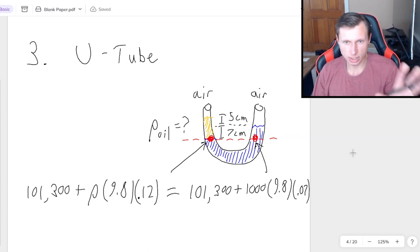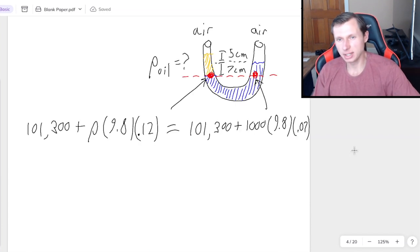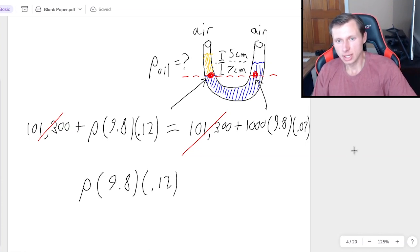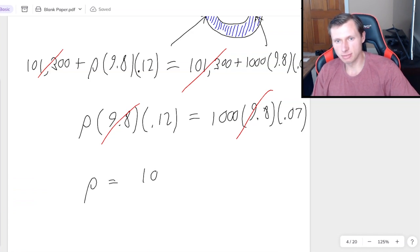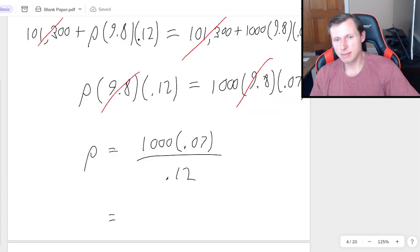I immediately notice the 101,300 will cancel on both sides. So rho 9.8 times 0.12 equals 1000 times 9.8 times 0.07. Looks like even the 9.8 will cancel, so this experiment could work on different planets, potentially. And then finally, I just have to divide both sides by 0.12 and plug this in a calculator. And that's going to get me 583.3 and this is kilograms per meter cubed.